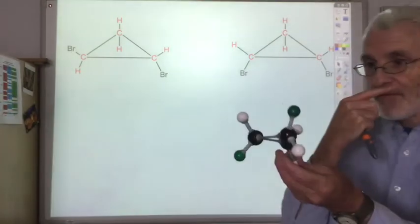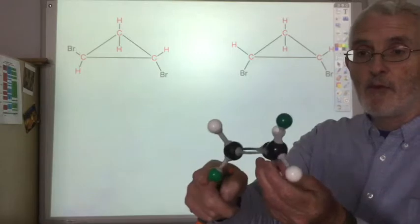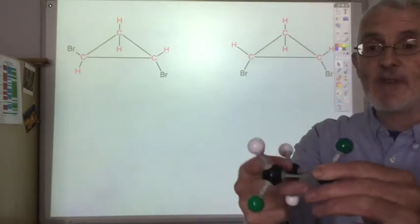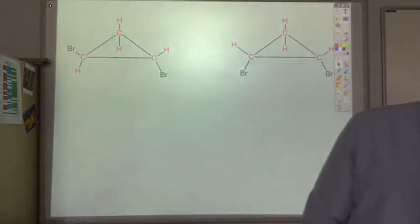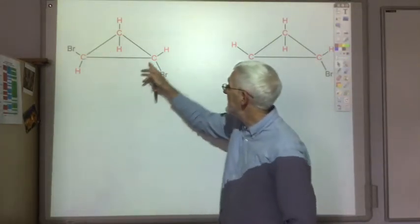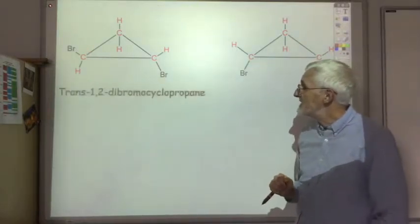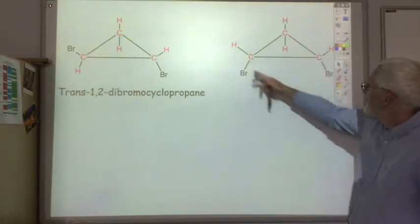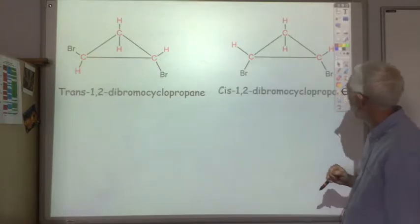Here's our left-hand one where the bromines are on separate sides. And again, we can't rotate them. The ring stops free rotation. So they're isomers. In this case, the bromines are on opposite sides—this is below the ring, this is above the ring. So that makes it trans-1,2-dibromo-cyclopropane. And in this case, the bromines are both below, so it's cis-1,2-dibromo-cyclopropane.